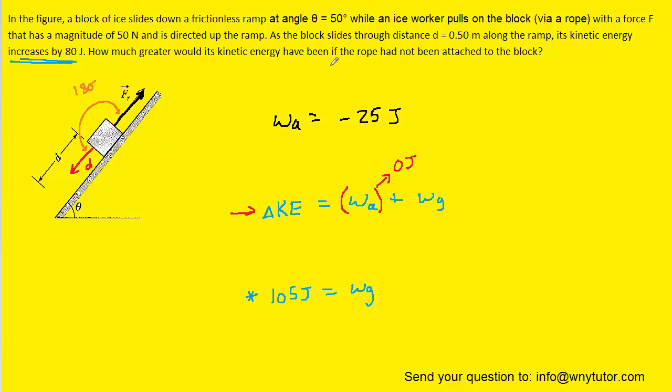Well, the question states that the rope is no longer being attached to the block. So, if the rope is no longer attached to the block, that means the applied force disappears. And if there's no applied force, then, of course, the work done by that applied force has to go to zero joules.